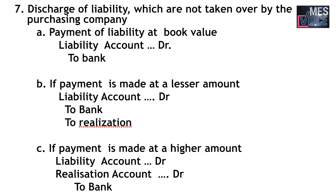For discharge of liabilities not taken over by the purchasing company but met by the vendor company, there are three cases: first, payment at book value — debit liability account, credit bank; second, if payment is made at a lesser amount — debit liability account, credit bank and credit realization; third, if payment is made at a higher amount — debit liability account, debit realization, credit bank.